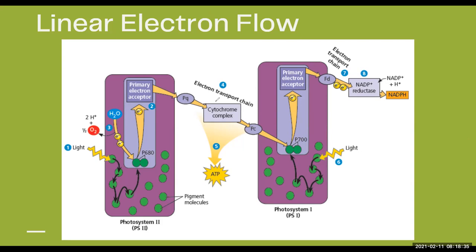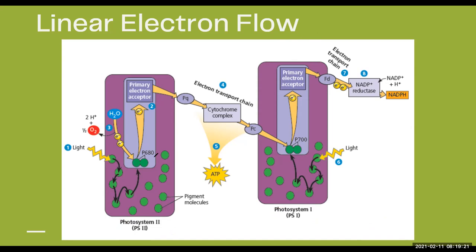The photosystem is embedded in the thylakoid. In most photosynthetic organisms, there are two photosystems: Photosystem 2 and Photosystem 1. Lower organisms like bacteria and other prokaryotic autotrophic organisms only have Photosystem 1, so we can consider Photosystem 1 to be more primitive compared to Photosystem 2. Most land plants have both Photosystem 2 and Photosystem 1.